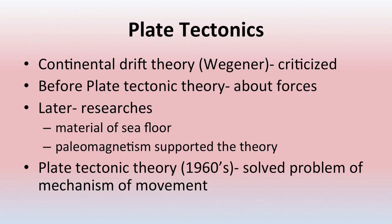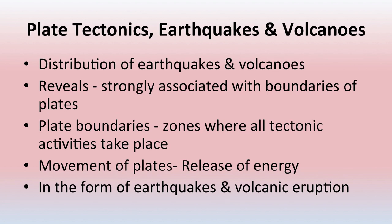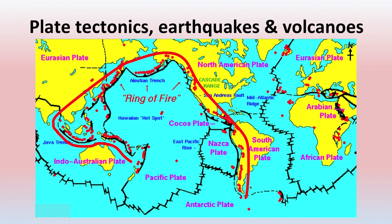The continental drift theory was initially criticized, but there is no other alternative, and later the material of sea floor, paleomagnetism, and plate tectonics all supported it — proving that continental drift took place millions of years ago and is still taking place. Plate tectonics is also related to earthquakes and volcanoes. There are several plate boundaries where volcanoes and earthquakes occur, as seen in the map showing the Ring of Fire — the red ring along which earthquakes and volcanoes take place, also known for hot spots.